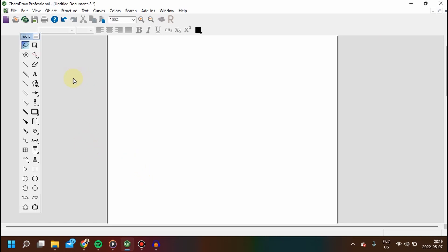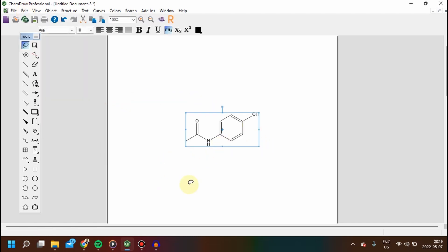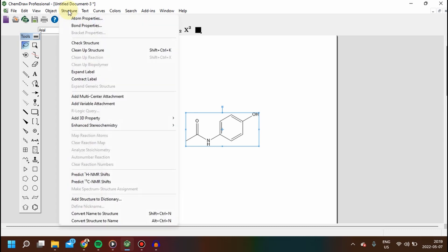To predict the NMR chemical shifts, we start by generating the structure. Select the structure and from the menu bar go to the Structure tab. There is a section for predict NMR chemical shifts that can be proton NMR or carbon NMR. Let's use proton NMR chemical shifts.